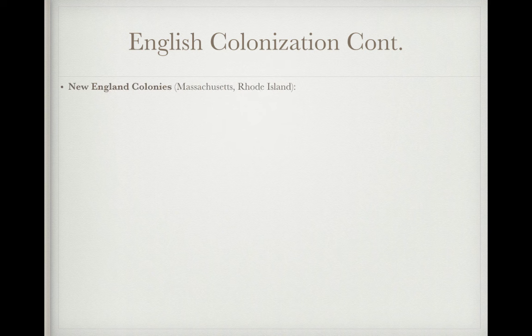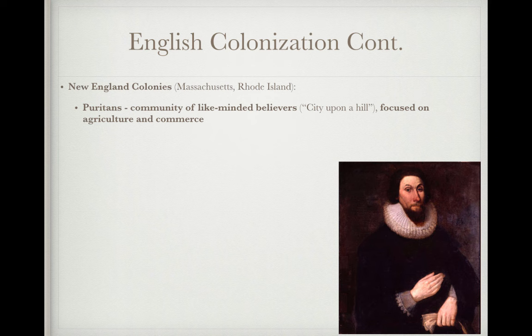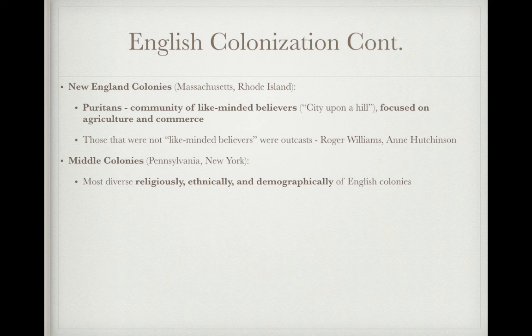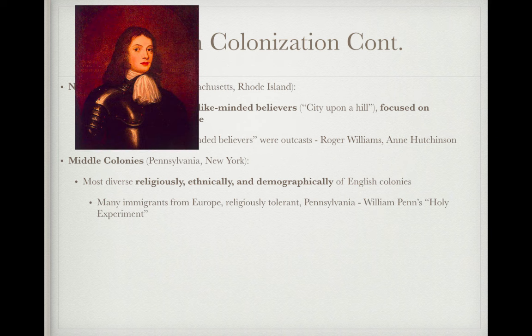In the New England colonies, Massachusetts was founded by Puritans who sought to establish a community of like-minded believers. John Winthrop gave a famous speech describing Massachusetts as a 'city upon a hill' — a model society for the world. They focused on agriculture and commerce, a mixed economy. Those who challenged Puritan doctrine — like Roger Williams and Anne Hutchinson — were expelled. The middle colonies, including Pennsylvania and New York, were the most diverse religiously, ethnically, and demographically of the English colonies.